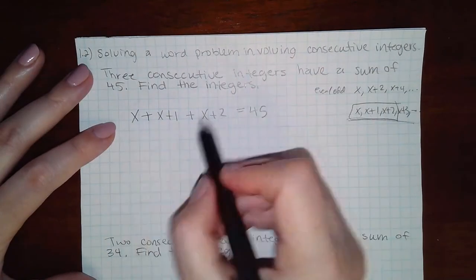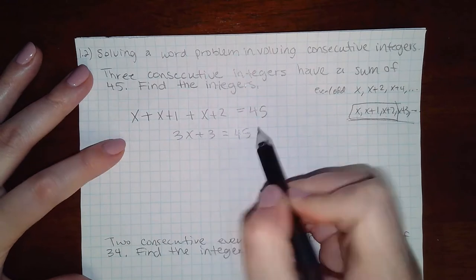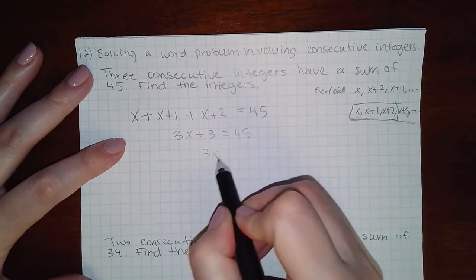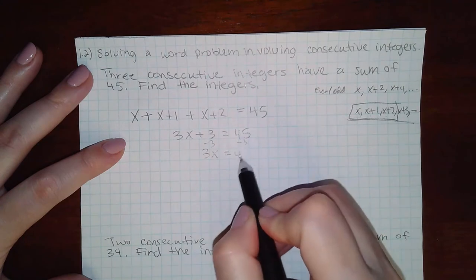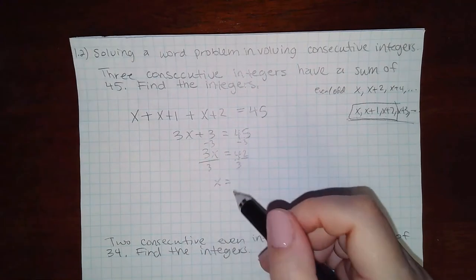If I combine my like terms I get this equation. If I start to subtract 3 on both sides and then divide by 3 on both sides, I end up with 14.